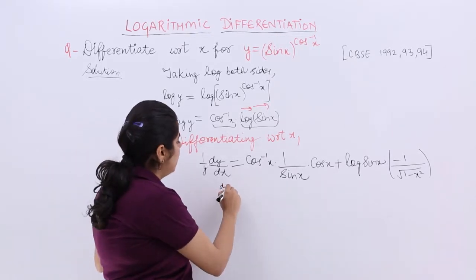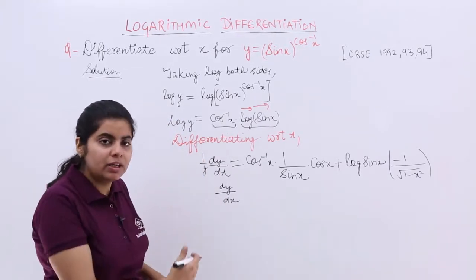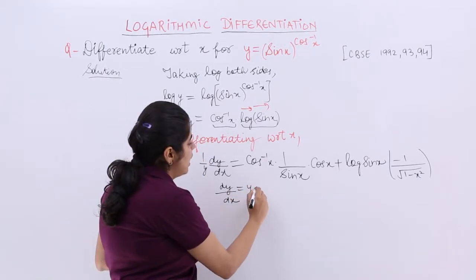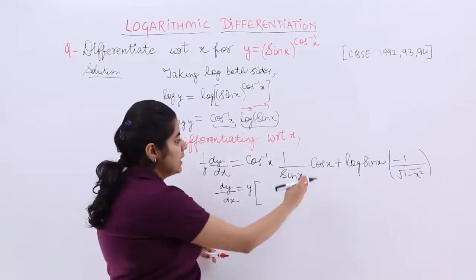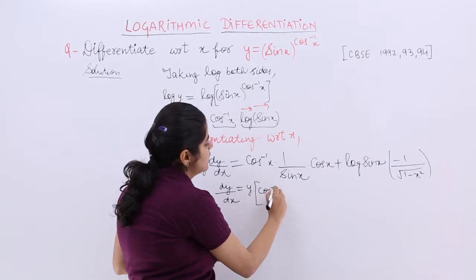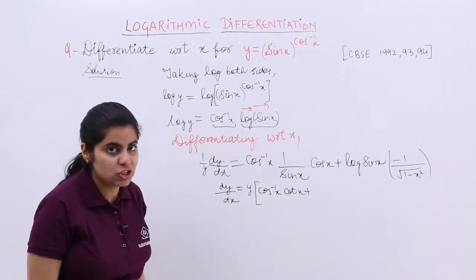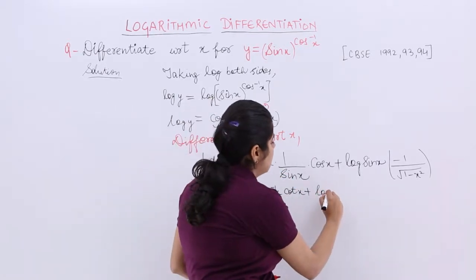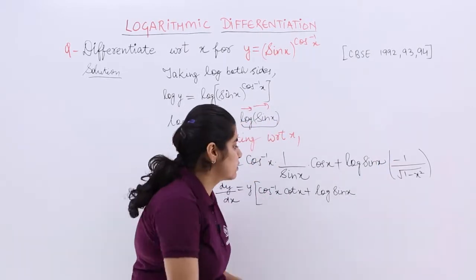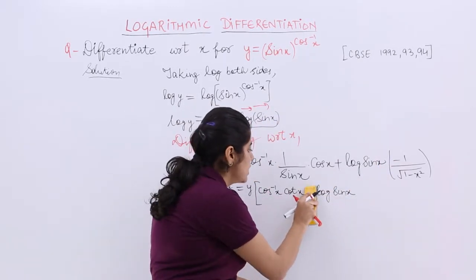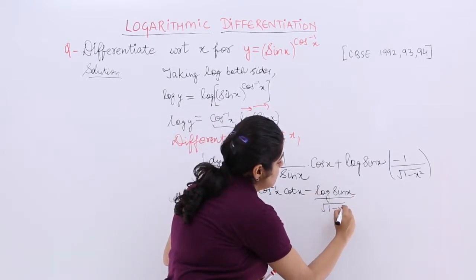So now dy by dx is there and 1 upon y is there. Let's keep y to the other side. So it becomes y multiplied by this whole thing. Now what is this whole thing? 1 upon sin x is there, this is there. So you can write cos inverse x, cos x plus because cos upon sin is cot x plus log sin x and minus 1 upon under root 1 minus x square is there. So let's make it minus only here. It becomes easy for us to justify. Log sin x upon under root 1 minus x square.